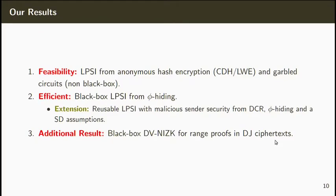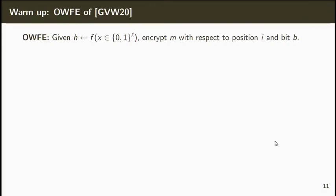For the rest of this talk, I'm going to focus on the black-box LPSI from phi-hiding. For the detailed description and analysis of our feasibility result, please check the full version of the paper. We now describe our construction based on the phi-hiding assumption. Our starting point is the construction of Goyal et al. for one-way functions with encryption from phi-hiding. In a one-way function with encryption, given H, which is the result of a one-way function applied to a string of bits x, the encryptor can encrypt a message with respect to a position i and a bit b. The decryptor can recover m if and only if x_i is equal to b; otherwise the message m remains hidden.